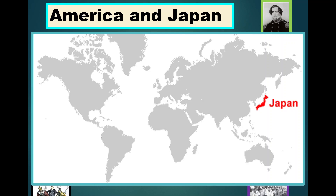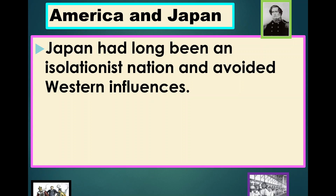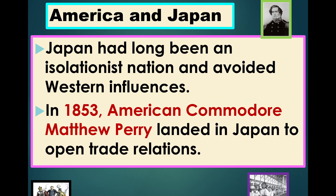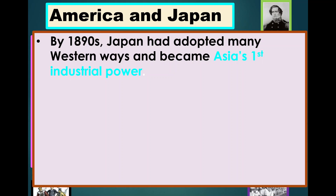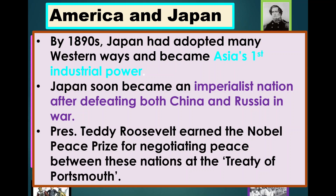Now we talk about Commodore Matthew Perry. Japan had long been an isolationist country, only doing some small trading with the Dutch. However, in 1853, American Commodore Matthew Perry moves in and opens up trade relations with Japan. By the 1890s, after the Meiji Restoration, Japan has adopted many Western ways and become Asia's first industrial power. Japan soon becomes an imperialist nation — after defeating both China and Russia, Japan wins the 1905 Russo-Japanese War and becomes the foremost industrial power in Asia. That's one reason why America wants a strong navy: to prevent Japan from controlling the Pacific.